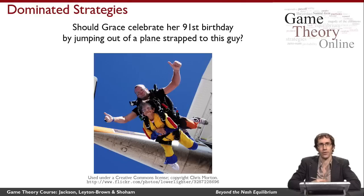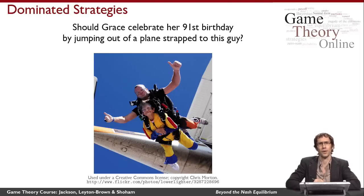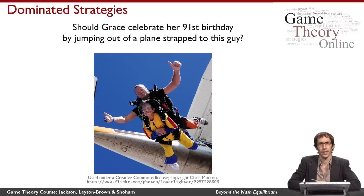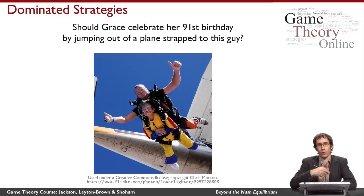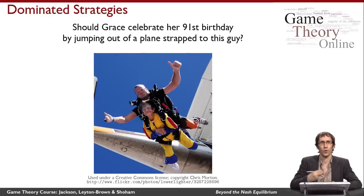She might worry that he would choose not to pack the parachute safely, in which case she would never get to celebrate her 92nd birthday. But she did choose to jump, and she landed safely. If she looked at the payoffs of the game, she would see that Bruce's action of not packing the parachute safely was very bad — not only for Grace, but also for himself. In fact, it was a dominated strategy. Knowing that he's rational, Grace reasoned that he would never play a dominated strategy. This is the idea of iterated removal of dominated strategies.